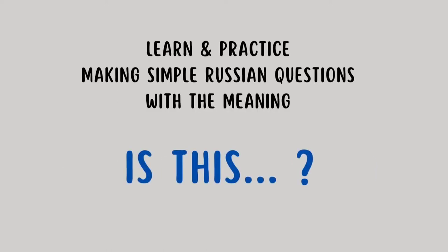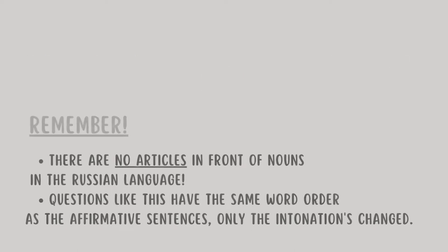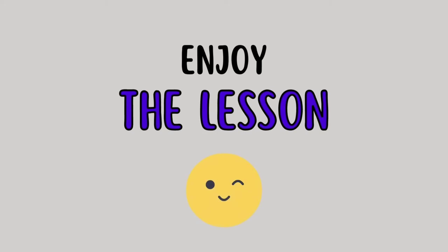You'll learn and practice making simple Russian questions with the meaning 'Is this?' 'Is this' means это in Russian. Please remember: first, there are no articles in front of nouns in the Russian language; and second, questions like this have the same word order as affirmative sentences — only the intonation changes. So let's start and please enjoy the lesson!